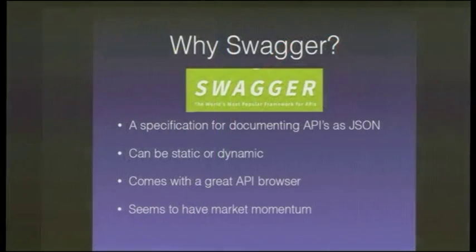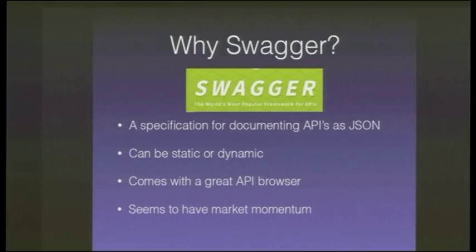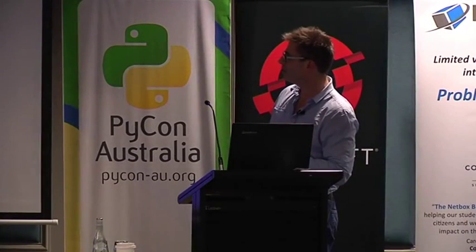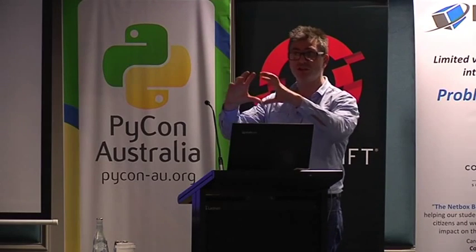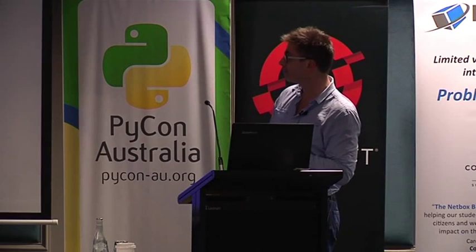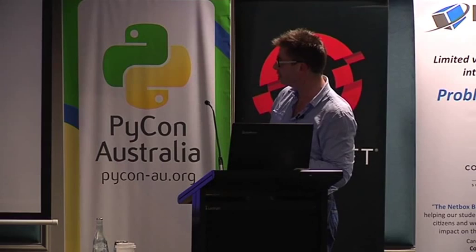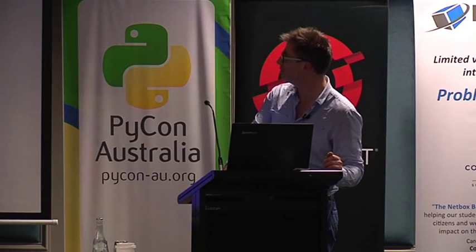Swagger is a specification designed specifically for documenting REST APIs, and it can work in one of two primary ways. Most people seem to use Swagger to automatically, dynamically pull REST API documentation out of code — they build the documentation into the code, which seems to me pretty complex and problematic. I took the alternative approach, which is that you just define your REST API in a static JSON document, and that takes a lot of the complexity out of the equation. Swagger seems to have the market momentum, so that's the one I went with.